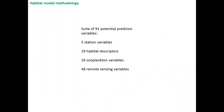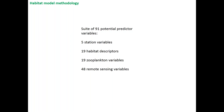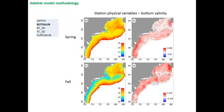The predictor variables comprise a suite of 91 variables initially: 5 station variables, 19 habitat descriptors, 19 zooplankton variables, and 48 remote sensing variables. Depth is what I call a static variable — it doesn't change over time. Salinity and temperature among the station variables are dynamic, fitted to annually varying data each year and each season.